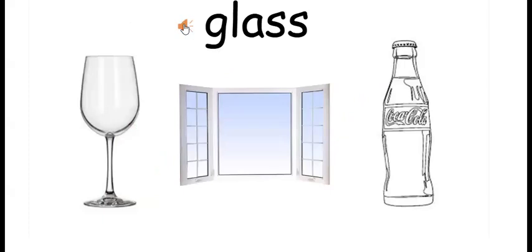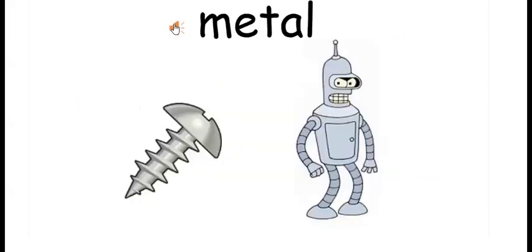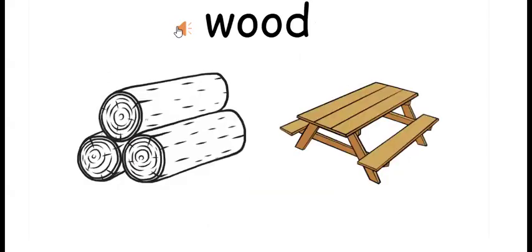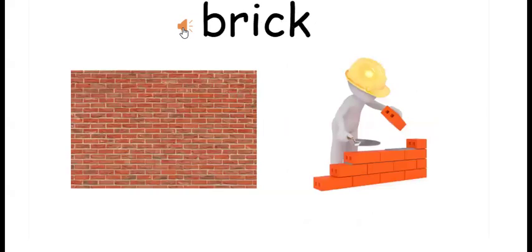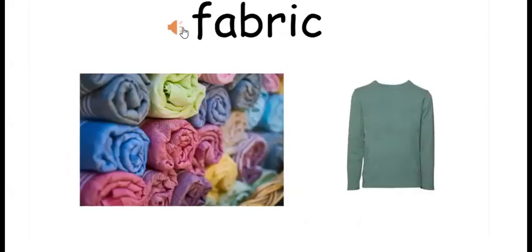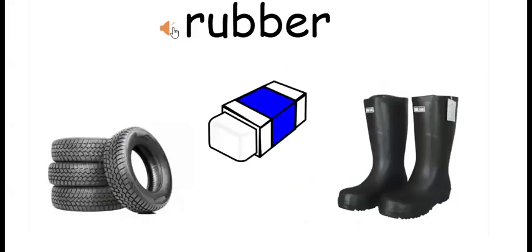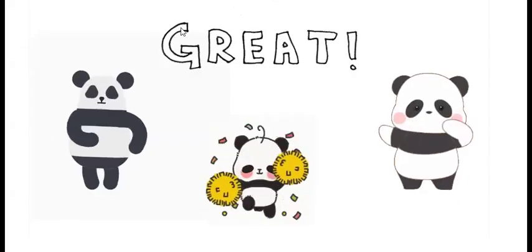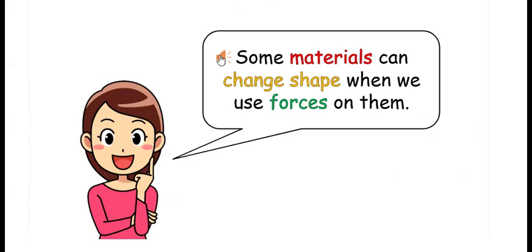The materials we reviewed: glass, metal, plastic, wood, brick, fabric, rubber, and stone. Some materials can change shape when we use forces on them.